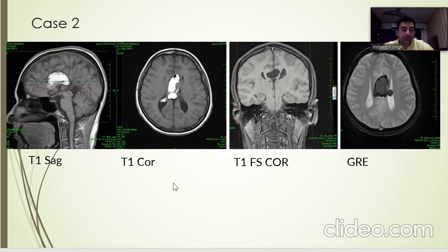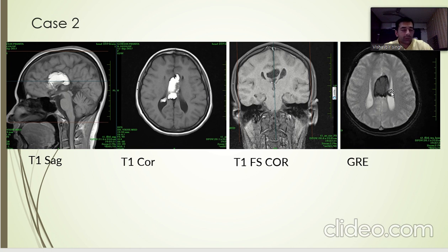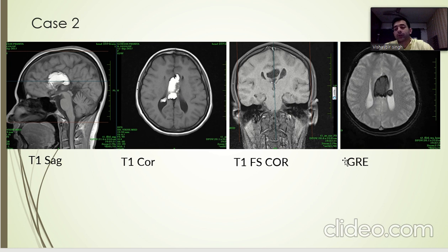In Case 2, we see another lesion in the interhemispheric fissure with extension into the right ventricle as seen on T1 coronal images. The corpus callosum is not well visualized and on fat-sat imaging it shows hypointensity. There is blooming seen on GRE sequence which can be due to peripheral calcification. This is a pericallosal interhemispheric fat-containing lipoma, possibly a dermoid with calcification, with associated partial agenesis of the corpus callosum and intraventricular lipoma or fat droplets due to rupture of dermoid.